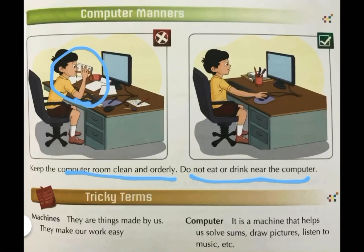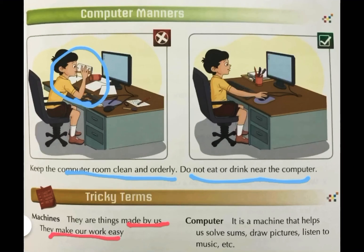Humne recently kya pada hai? About the machines and computer. Machines kya karte hain? They make our work easier. And they are made by whom? They are made by humans — that is us. And what about computer? Computer is a machine that helps us to solve sums, draw pictures, and listen to music.